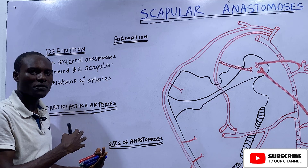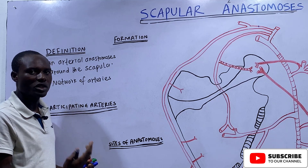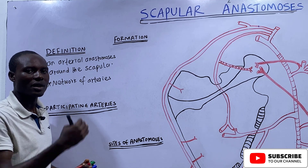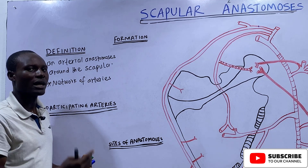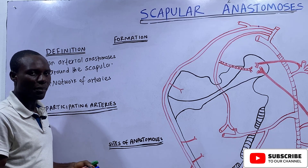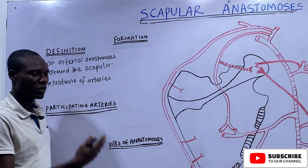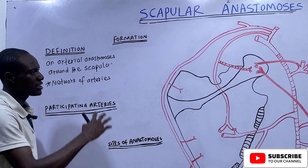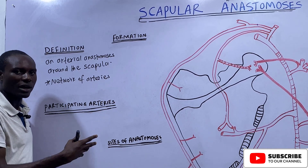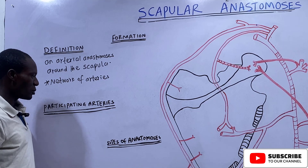The scapula has a costal surface and a dorsal surface. The dorsal surface has a bony projection known as the spine of the scapula. The scapula has a superior border, a lateral border, and a medial border. It equally has an apex that corresponds to the inferior angle of the scapula. There is a rich arterial network around the scapula, and that anastomosis is called the Scapular Anastomosis.